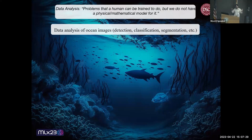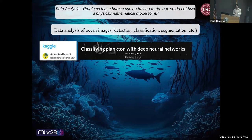A second very large subgroup within data analysis is the analysis of ocean images and videos taken inside the ocean, where machine learning can help in many ways: detection, classification, identification, segmentation, and more. One example was one of the first big challenges on Kaggle — it's 2015, and we are already classifying plankton images, which gives an idea of how long we have been using machine learning in this area.